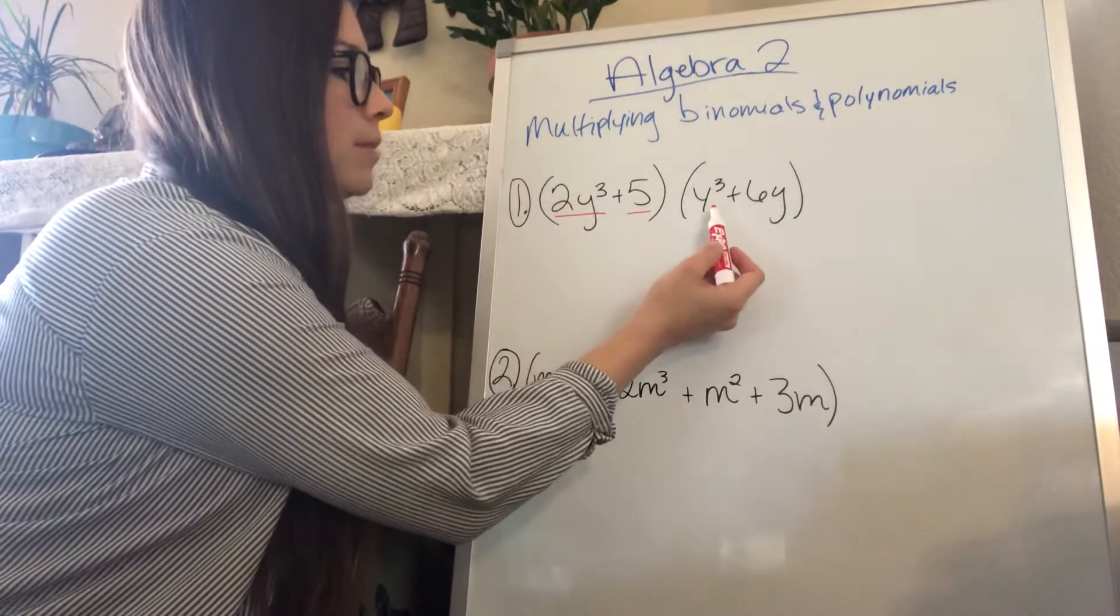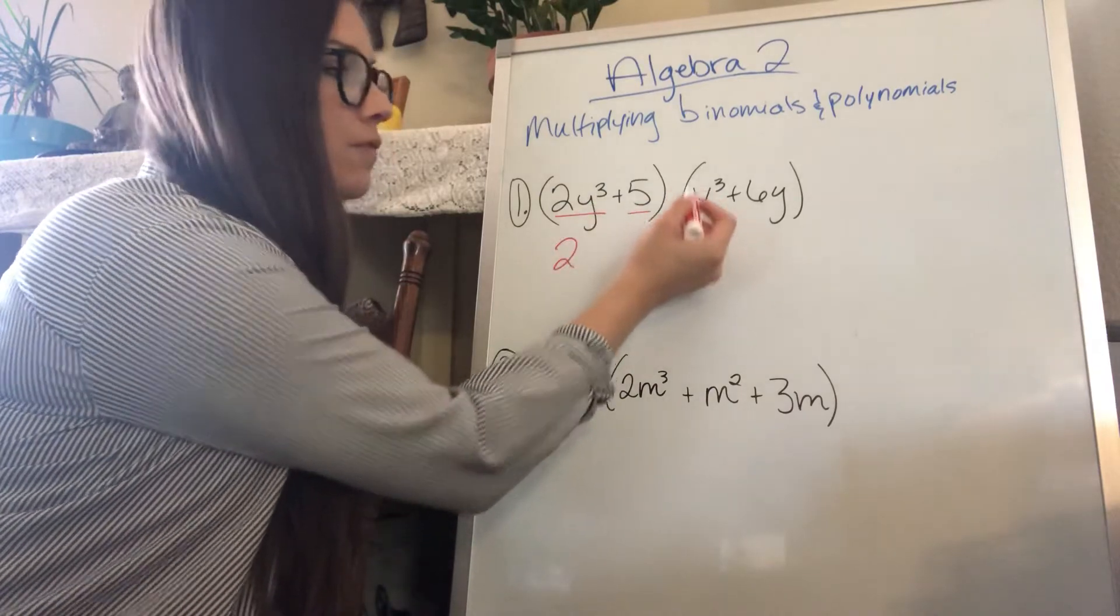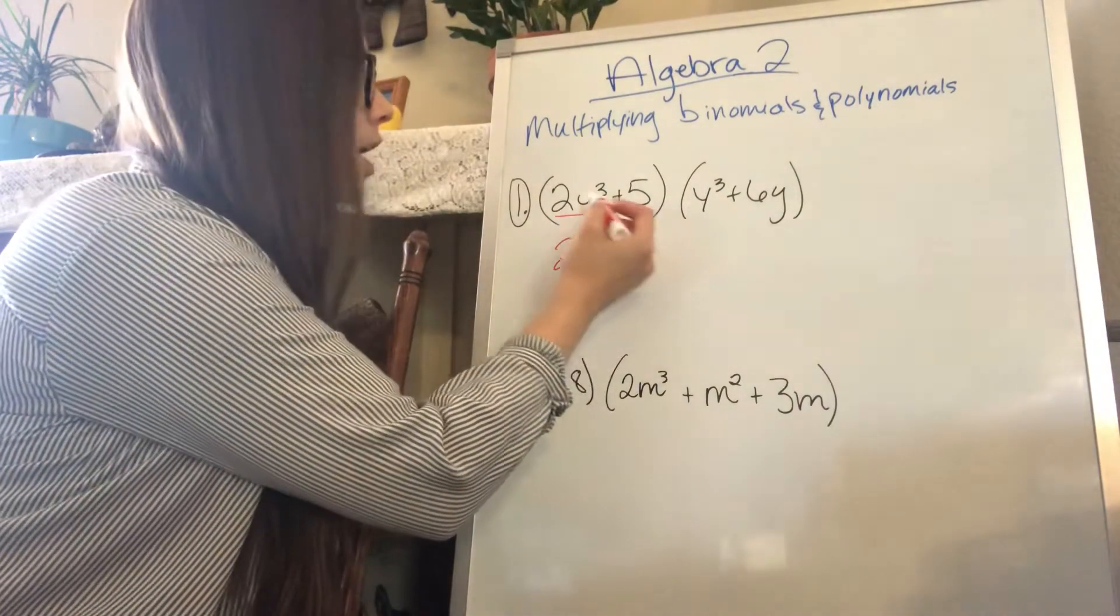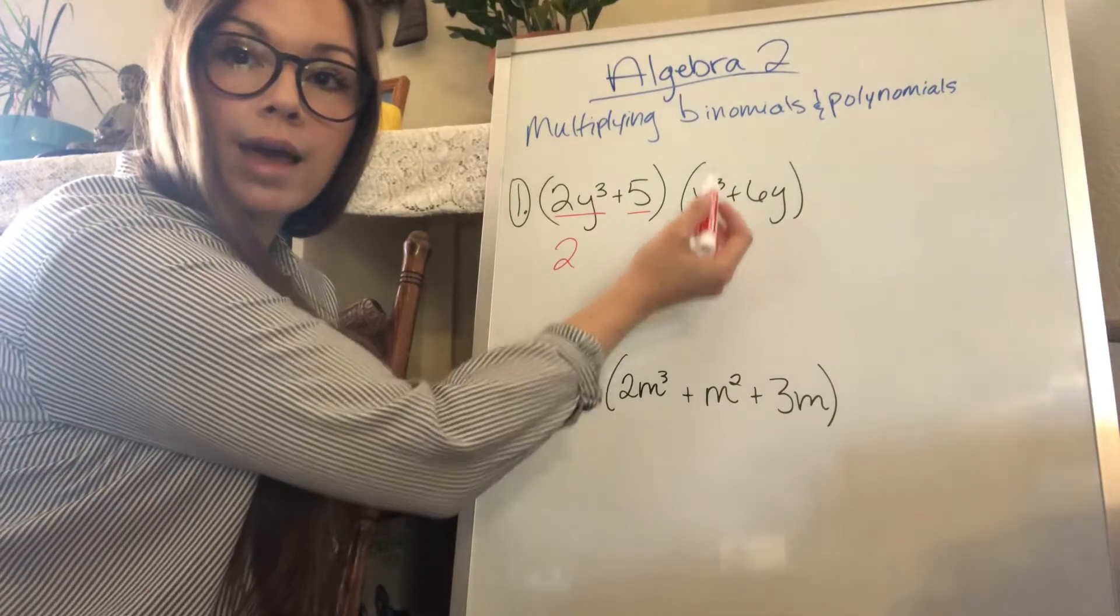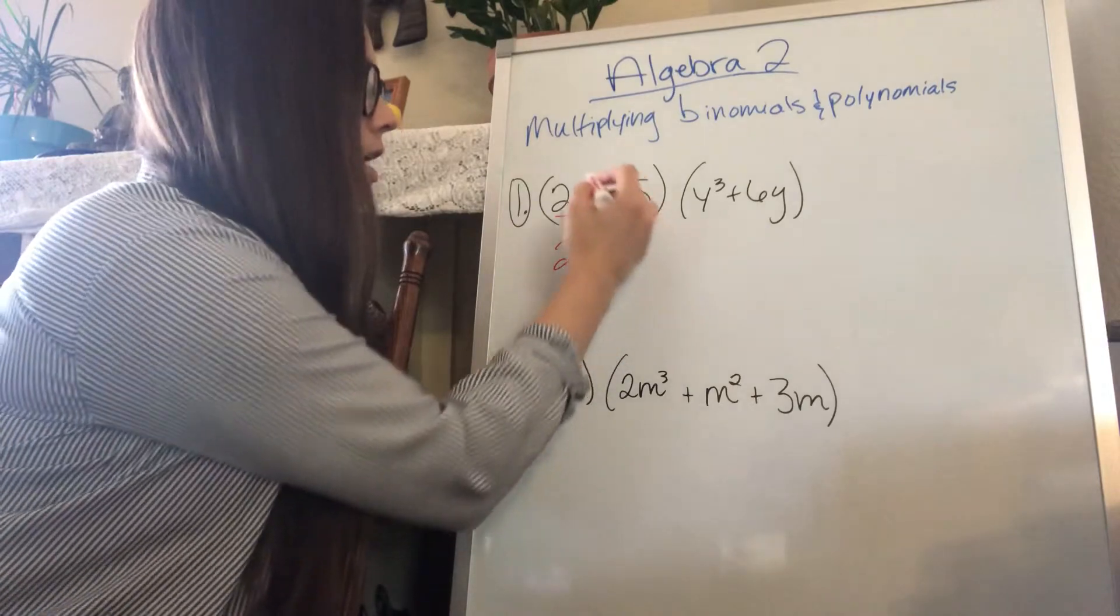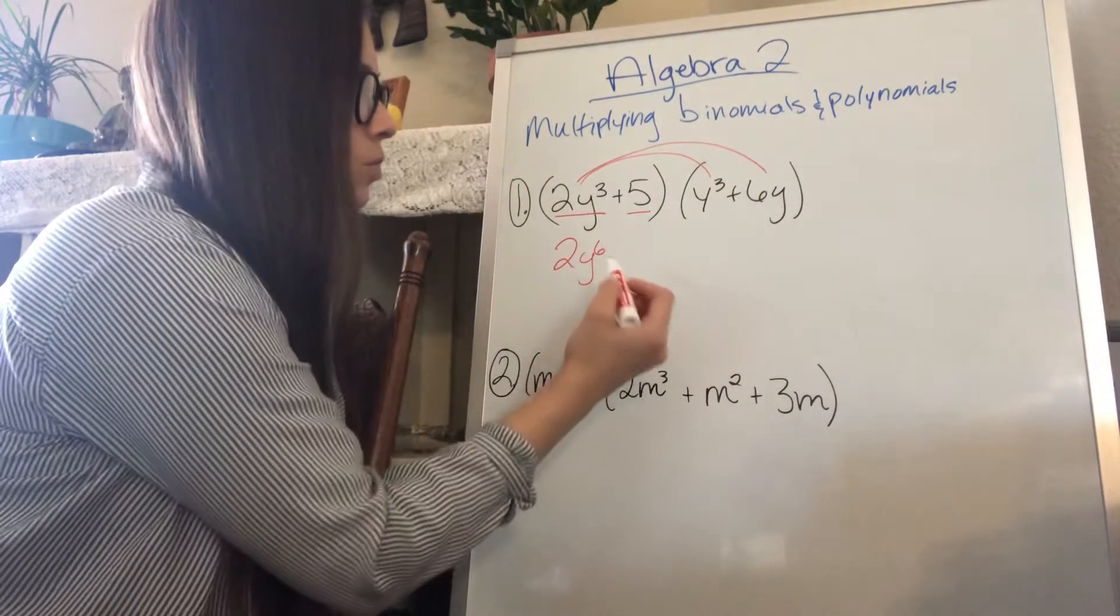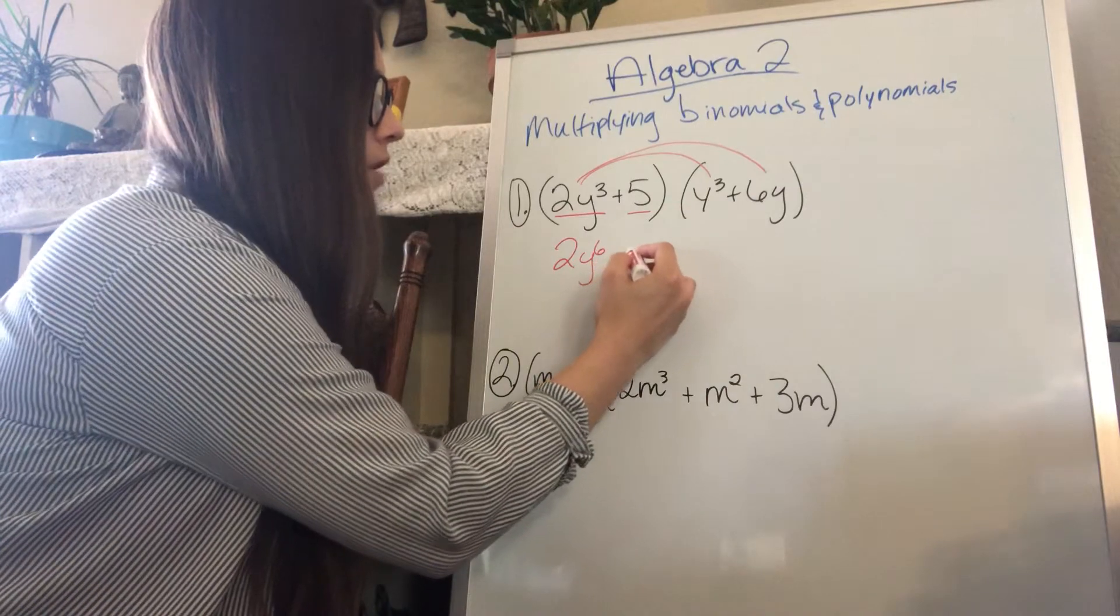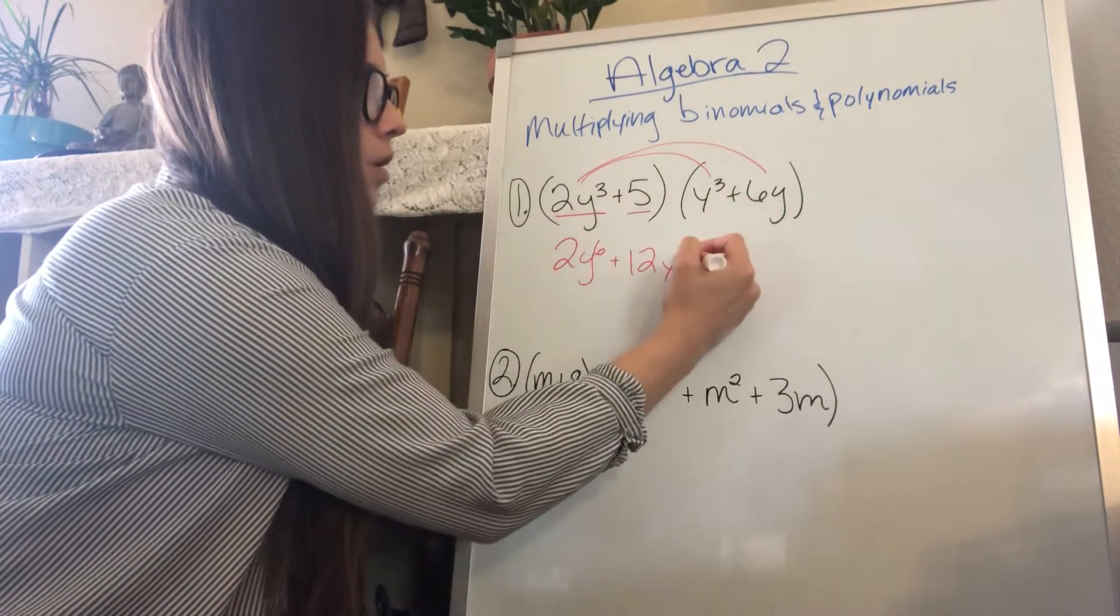So 2y cubed times y cubed is going to be 2, because 2 times that invisible coefficient of 1 is 2, and then y cubed times y cubed. Remember when we multiply the variables, we add the exponents, so that's going to be 2y to the 6th.